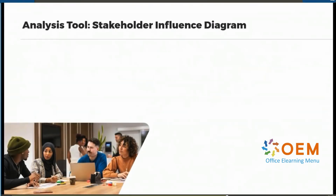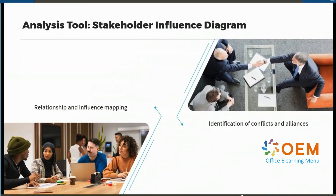Let's shift our focus to another useful analysis tool: the stakeholder influence diagram. This tool helps you understand the relationships and influence dynamics between stakeholders. By mapping out these connections, you can identify potential conflicts and alliances. For example, in a healthcare project, you might find that doctors and nurses have a strong influence on each other, while patients have less direct influence. Understanding these dynamics allows you to develop strategies to manage stakeholder interactions and ensure smooth project progress.